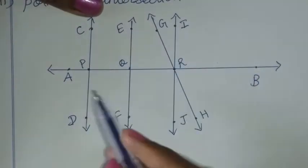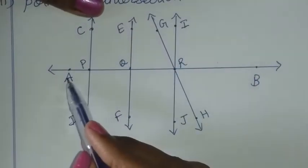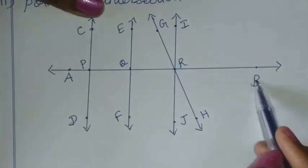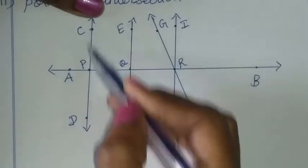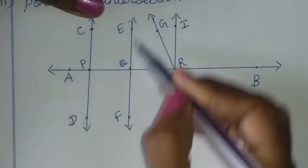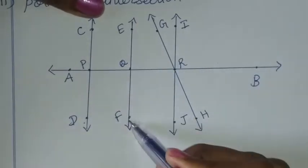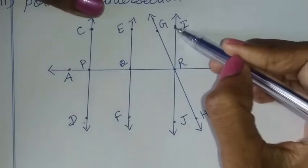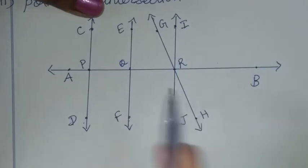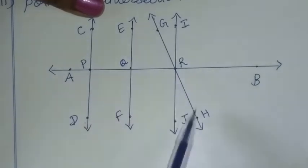First, the lines are: A, B, C, D, E, F, I, J, G, H.